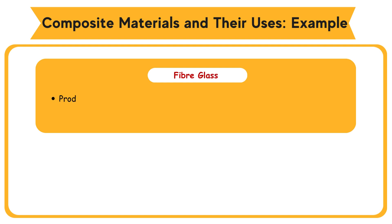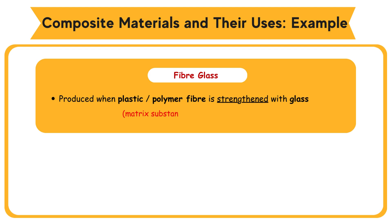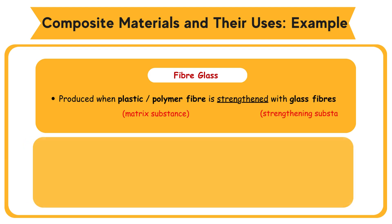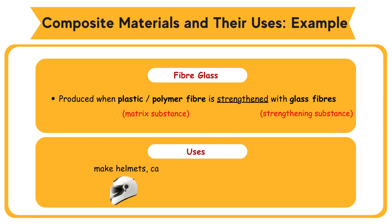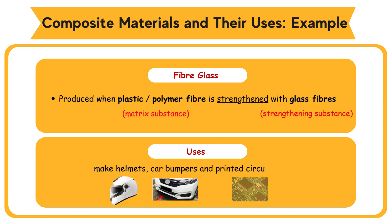Fiberglass is produced when plastic or polymer fiber (matrix substance) is strengthened with glass fibers (strengthening substance). Uses: make helmets, car bumpers, and printed circuit boards.